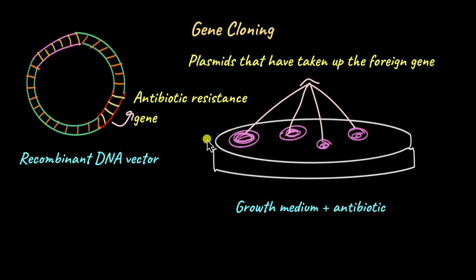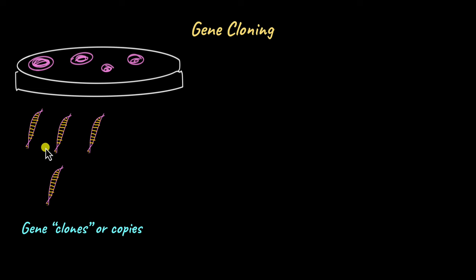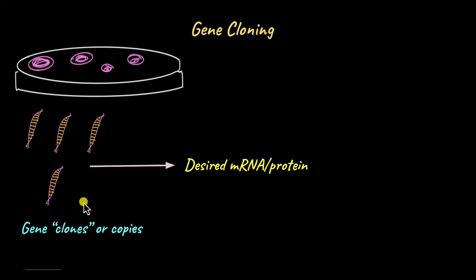Scientists can then isolate the cultures that have taken up the plasmid with the desired gene. As the cells replicate, clones of the desired gene are produced, from which we can extract the desired mRNA or protein. For example, to produce the mRNA vaccine for COVID-19, the gene from the virus was isolated, copies were cloned, and the desired mRNA was extracted from the culture, which was then developed into the vaccine.